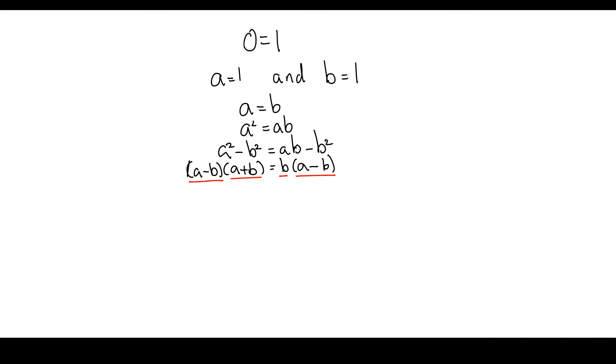And the reason being is, how many times does 0 go into something? It really can't be answered. So if I divide both sides by 0, I end up with A plus B equals B.